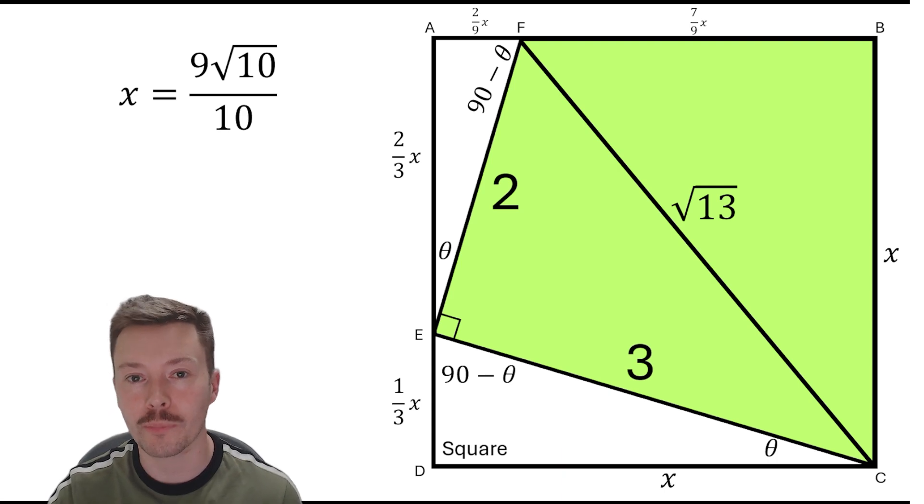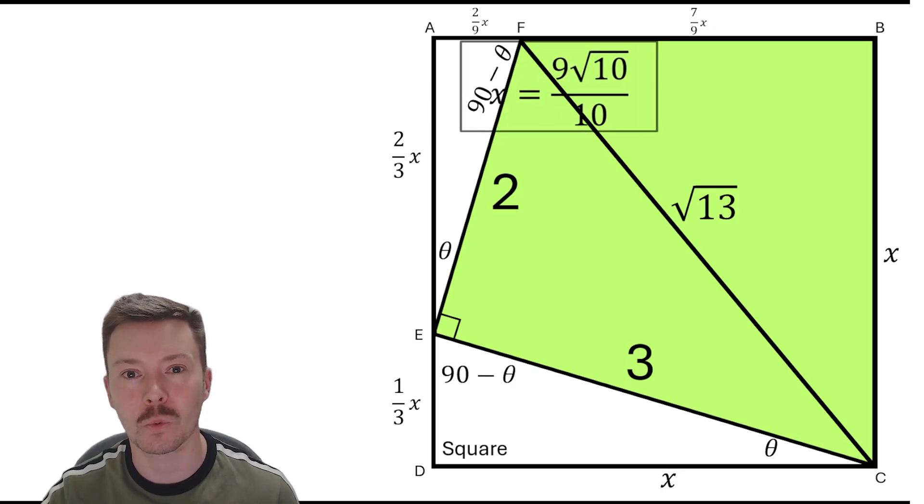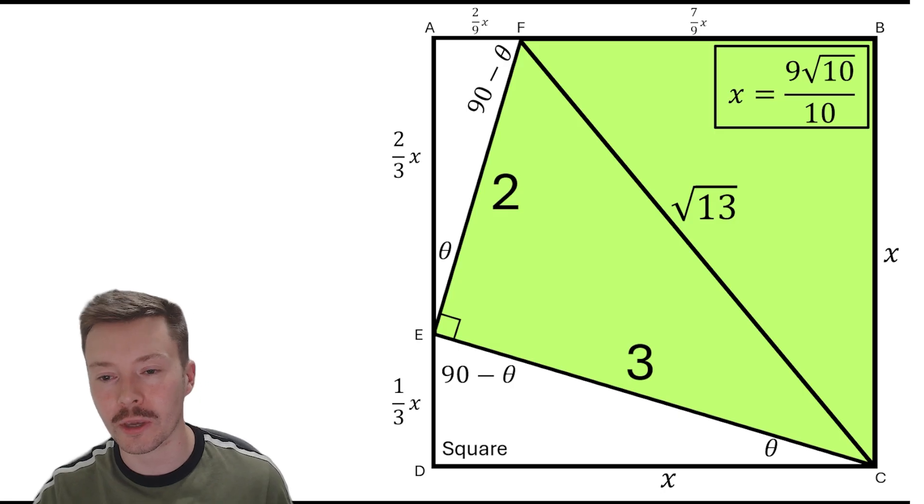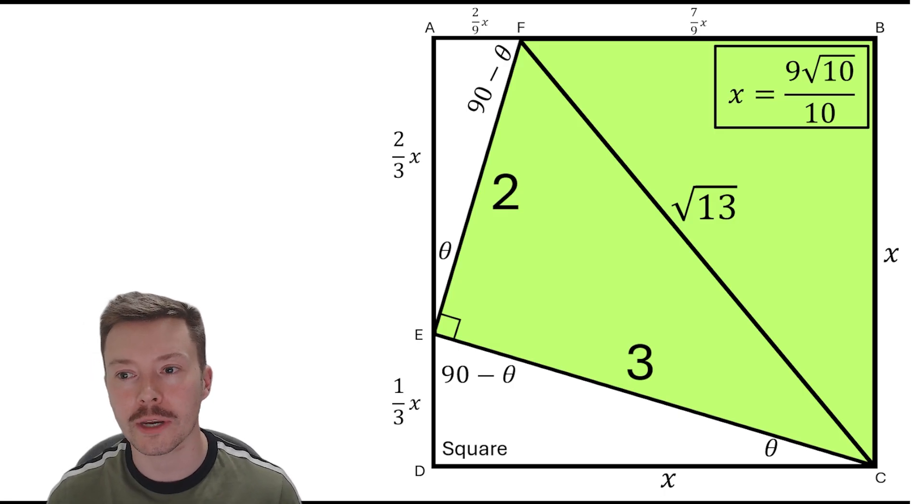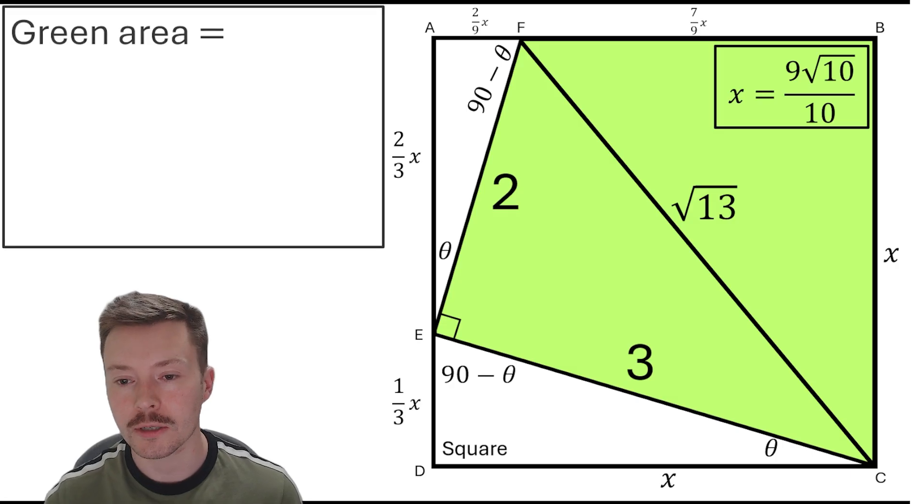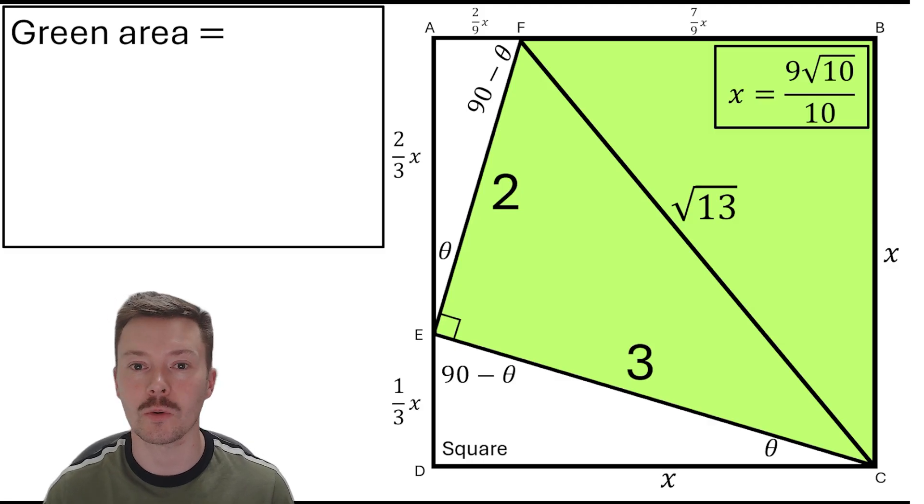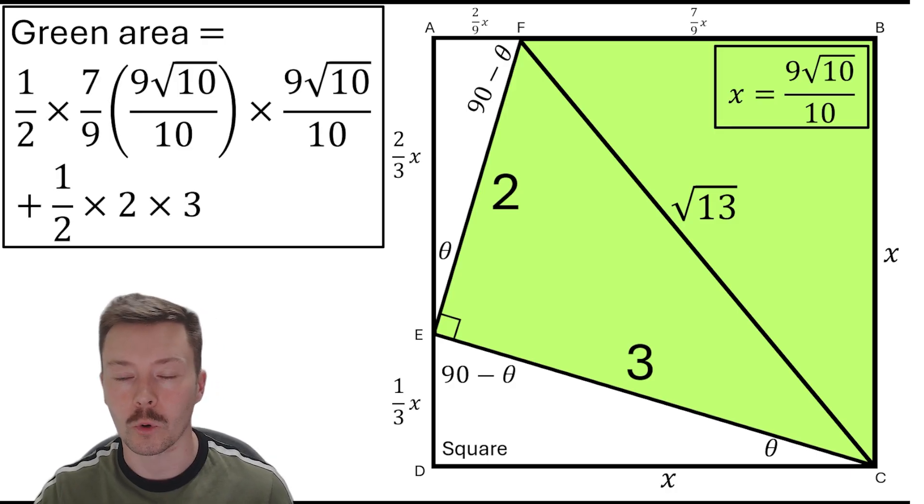Now from this point we've pretty much got it, we just need to do the last little bits. So I'm going to put this to one side, I'm not going to write 9 root 10 over 10 everywhere on the diagram because it's going to get a little bit messy. So we're just going to put that to one side, and then we're going to start to calculate the area of both of these green triangles. So what I'm going to do is I'm going to calculate FBC, so that's a half times by the base times by the height. So I'm going to do a half times F to B, seven ninths x, times by B to C which is x. And I'm then going to add on a half of three times by two, or two times by three. Doesn't matter which way around it is because multiplication is commutative.